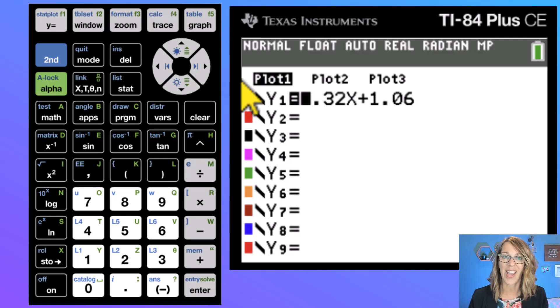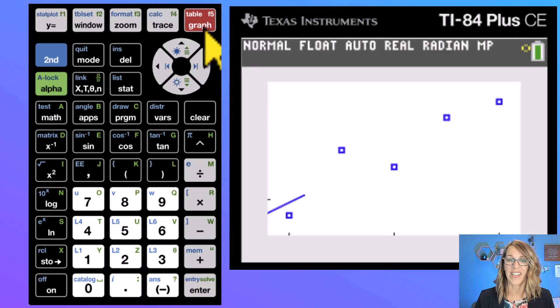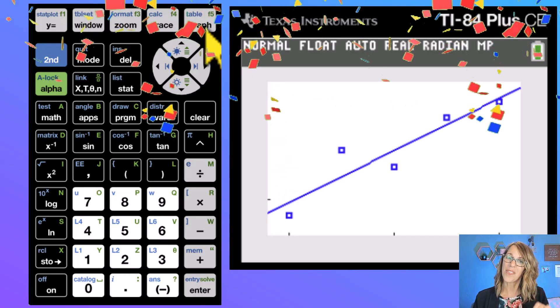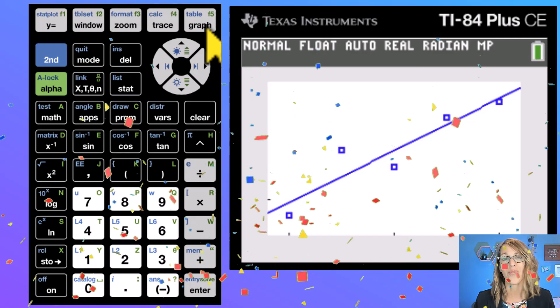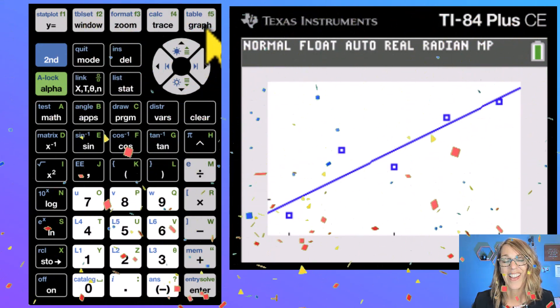Plot one is our scatter plot. This is exactly what I want so let's graph this and I've got both that regression equation and the scatter plot on one screen together.